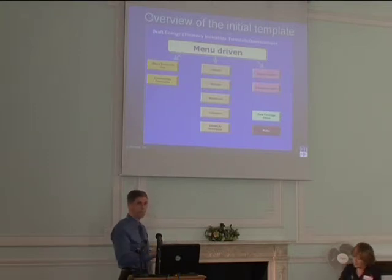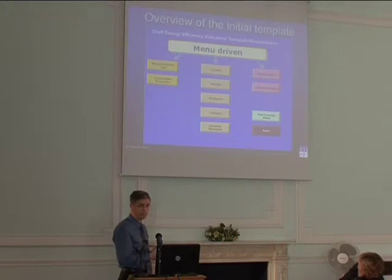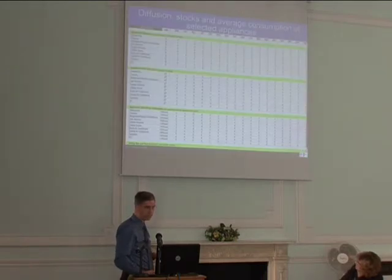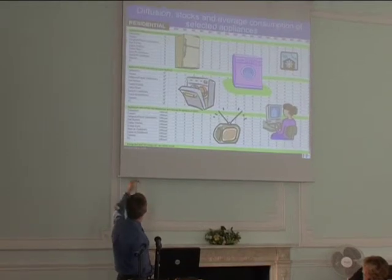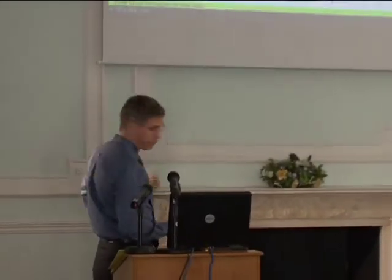A lot of the tool is prefilled. Everything already available — GDP, steel production, all the basic energy indicators — is prefilled. We're asking countries to provide the detailed information, such as fridge, freezer, and key appliances, their unit count and unit consumption. For example, in Canada, appliance unit consumption has been going down quite a bit in the last 15 years.